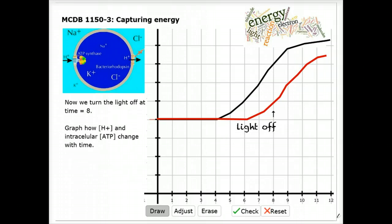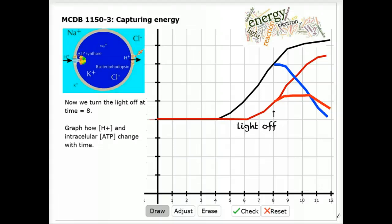Now we can follow the behavior of the system once we turn the light off. Immediately after the light turns off, hydrogen ions still go through the ATP synthase, so their ion concentration gradient starts to dissipate. Hydrogen ions move from the outside of the cell to the inside of the cell.